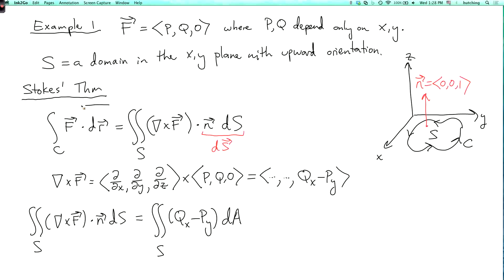So Stokes' theorem tells us that the integral over c of f dot dr is equal to the double integral of our plane domain of q x minus p y dA. These two are equal, and of course this is Green's theorem.